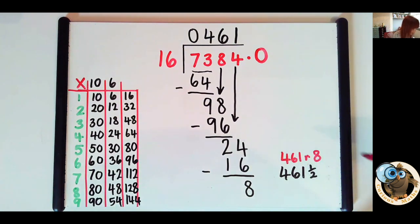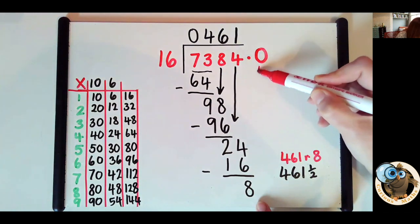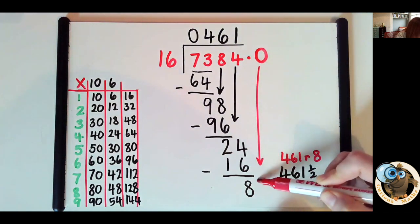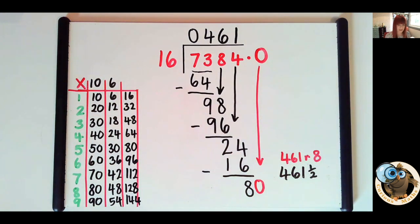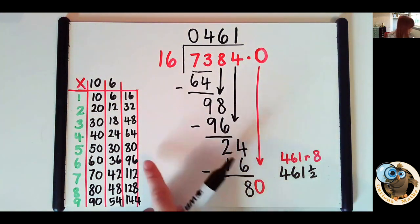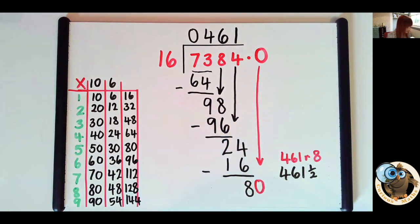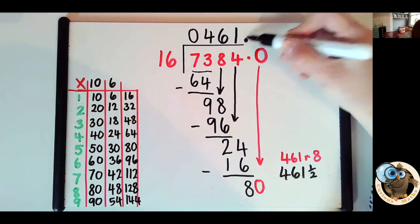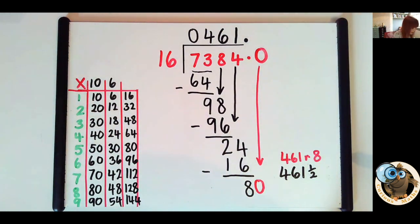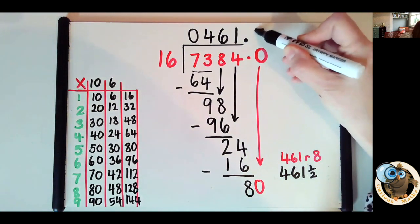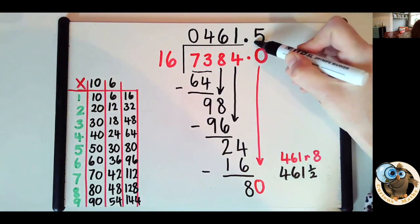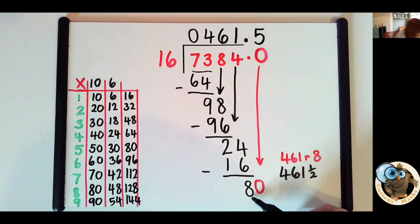So what we do here is, instead of leaving that remainder of 8, we're going to bring that zero down. And that's going to become 80. So how many 16s in 80? Look, there are 5 16s in 80. So what I need to do is put my decimal point in my answer. That's really important. And I can represent that 5 there. And I haven't left myself enough space really, but of course, I'm going to take that 80 away, and then I end up with zero.